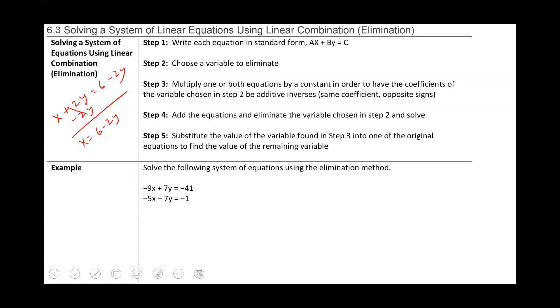So how do we do linear combination? Step one: write each equation in standard form, which means the x's and y's are on one side and the numbers are on the other side, and we put them in order with x and then y. That's always going to be step one.